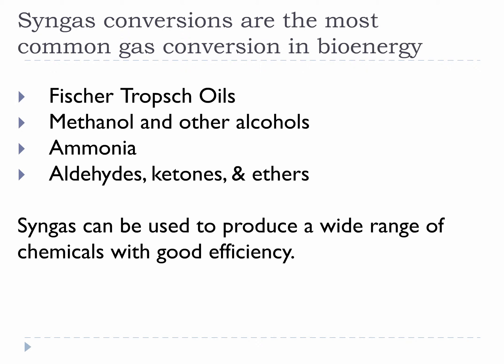Syngas conversions are the most common gas conversion in bioenergy. They are used to produce things like Fischer-Tropsch oils, methanol and other alcohols, ammonia, and aldehydes, ketones, and even others. While syngas can be used to produce a lot of different things, logical consideration of thermodynamics makes it pretty clear that the best syngas conversions will happen with reactions that generate chemicals similar to syngas. This means syngas reactions that produce low molecular weight, oxygen-rich chemicals will usually have better efficiencies than reactions that produce high molecular weight hydrocarbons, like Fischer-Tropsch oils. So the gist of that is, methanol will be easier to produce than Fischer-Tropsch oils.